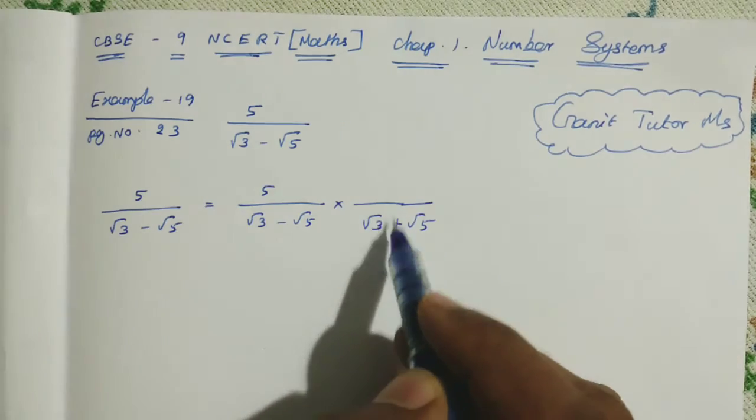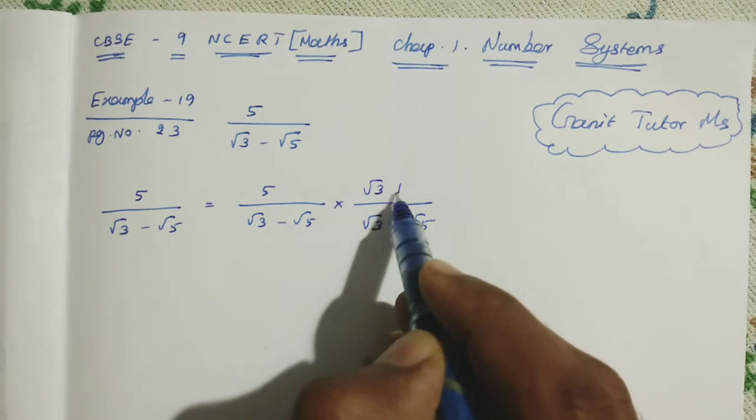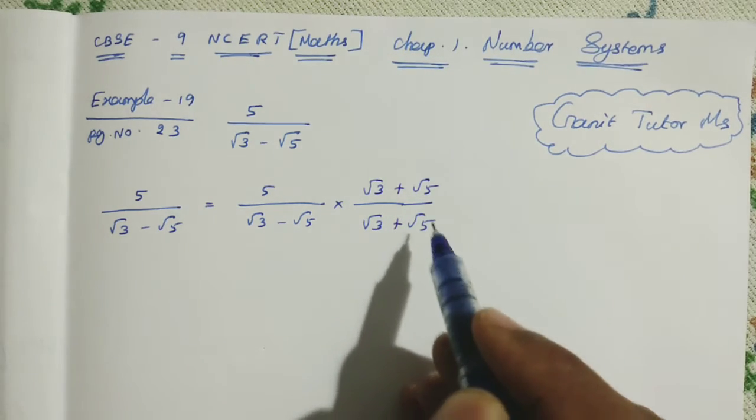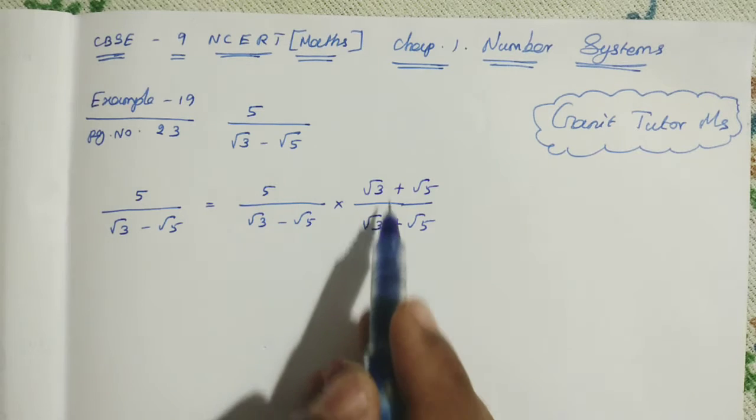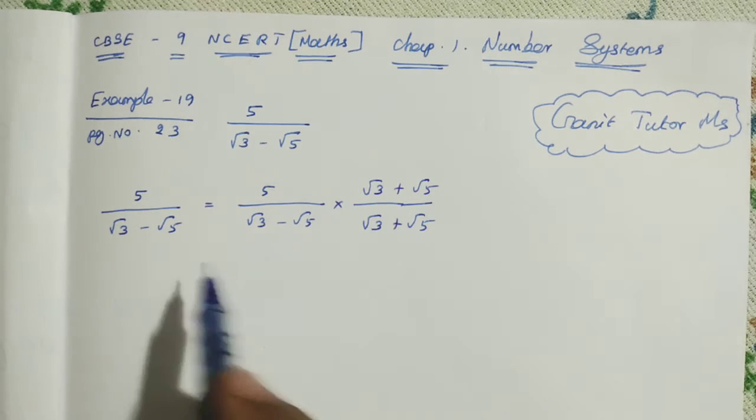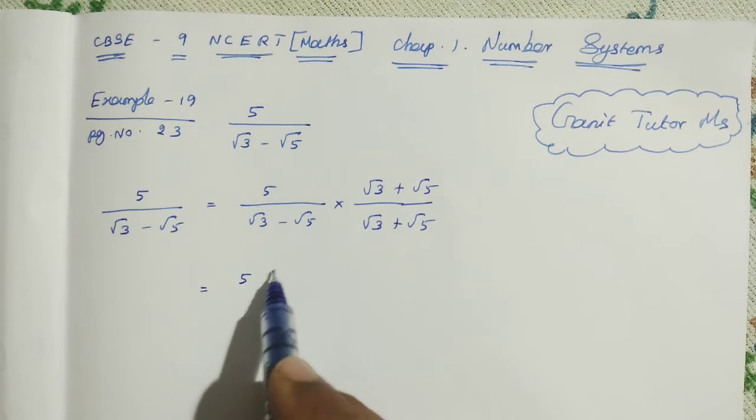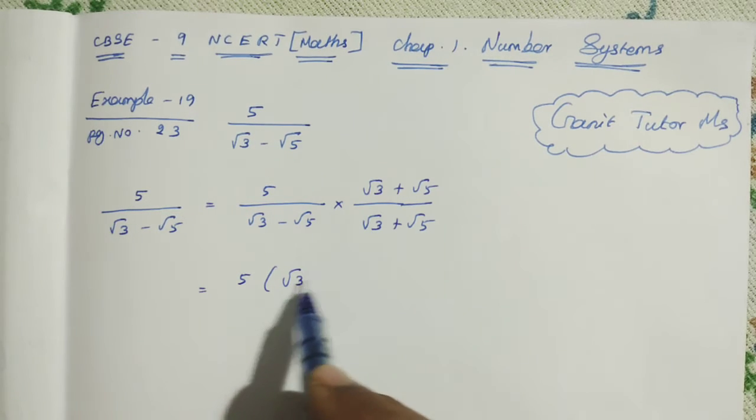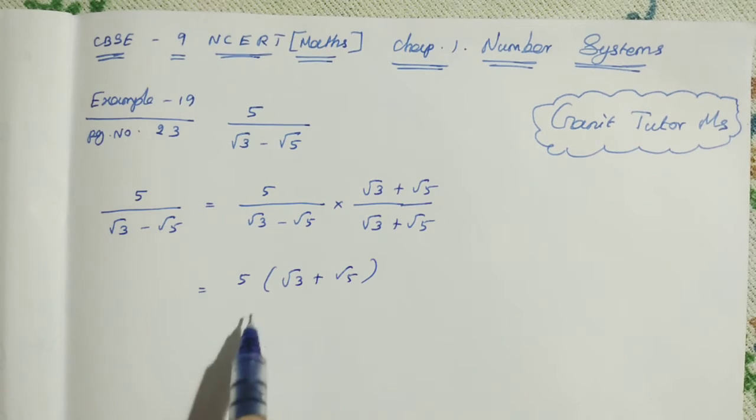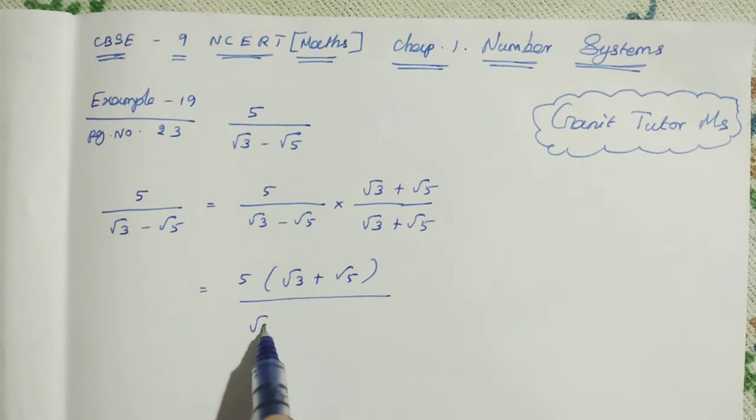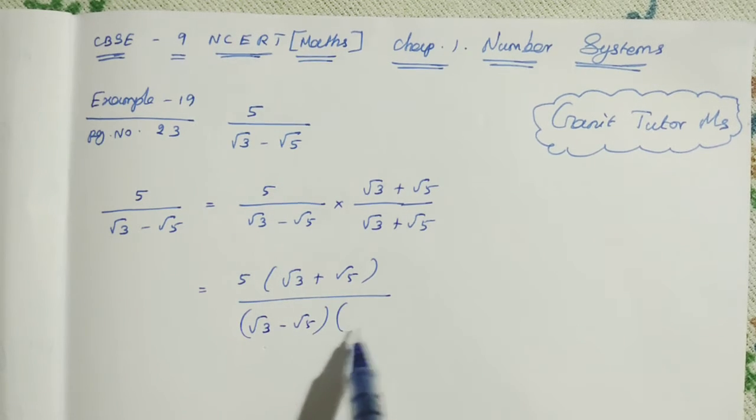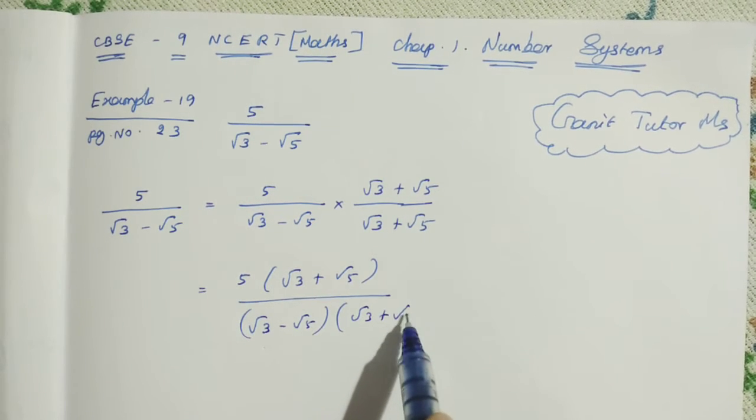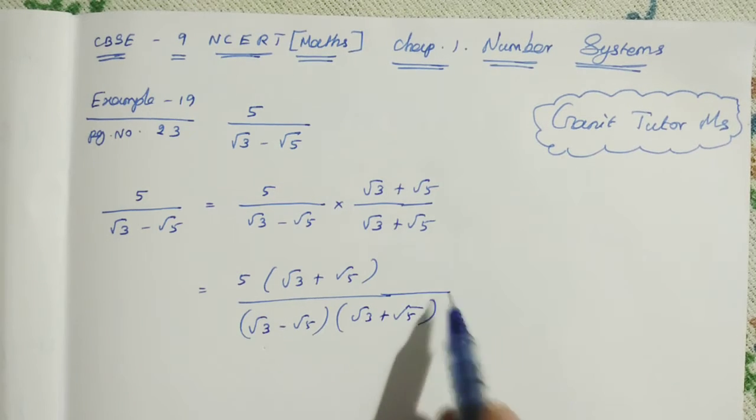Next, the same number we multiply in the numerator also, root 3 plus root 5. Here it is minus, so we multiply by plus in the numerator as well as the denominator. Then, 5 times root 3 plus root 5, divided by root 3 minus root 5 times root 3 plus root 5.